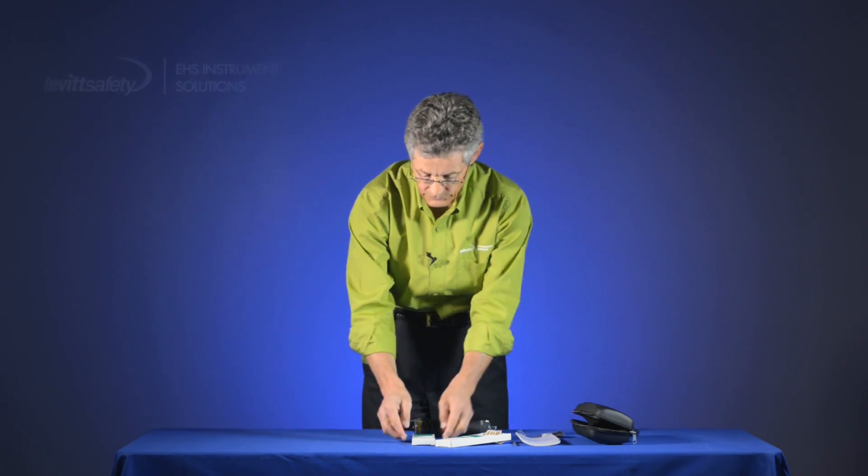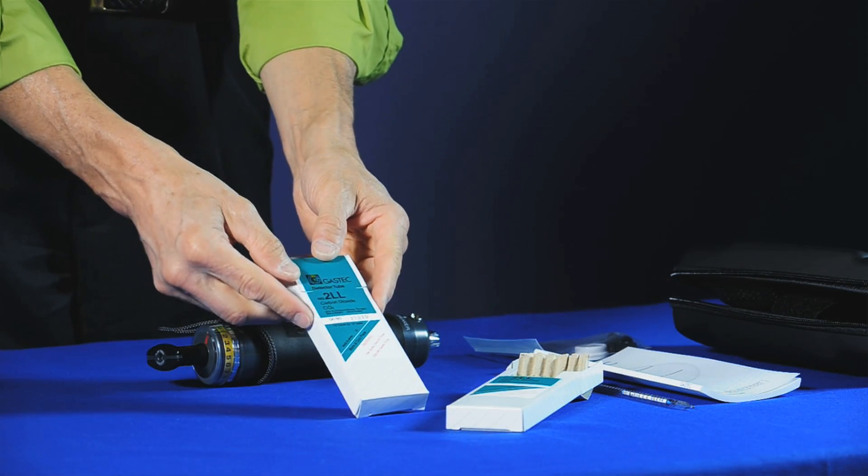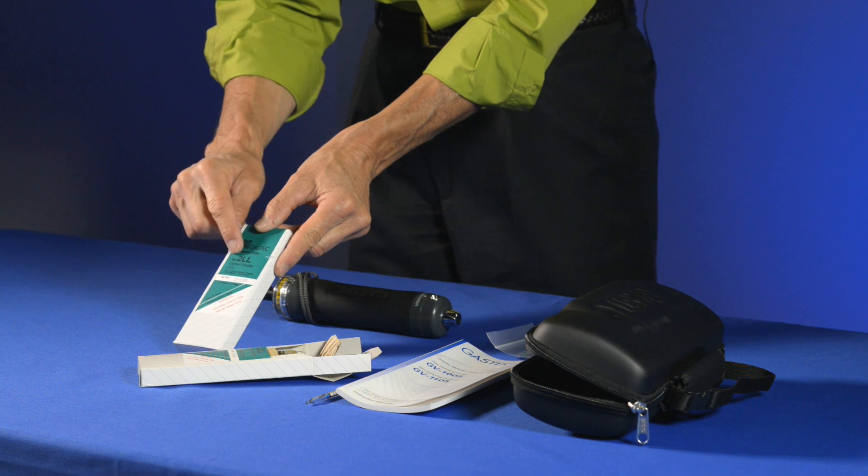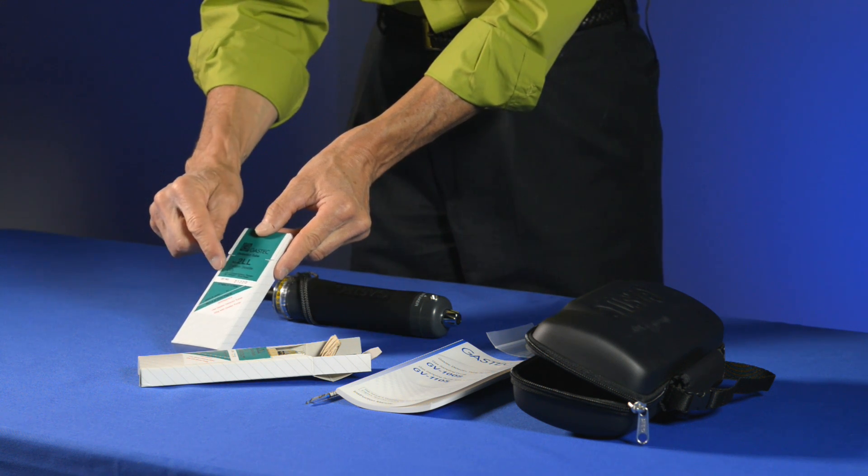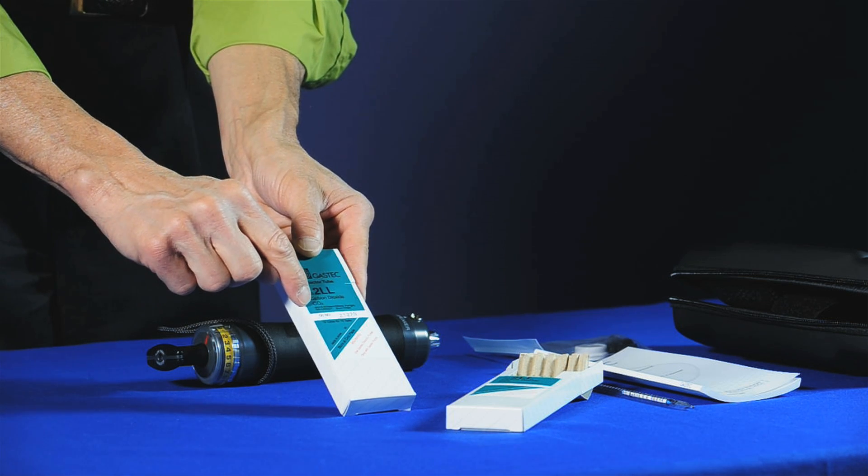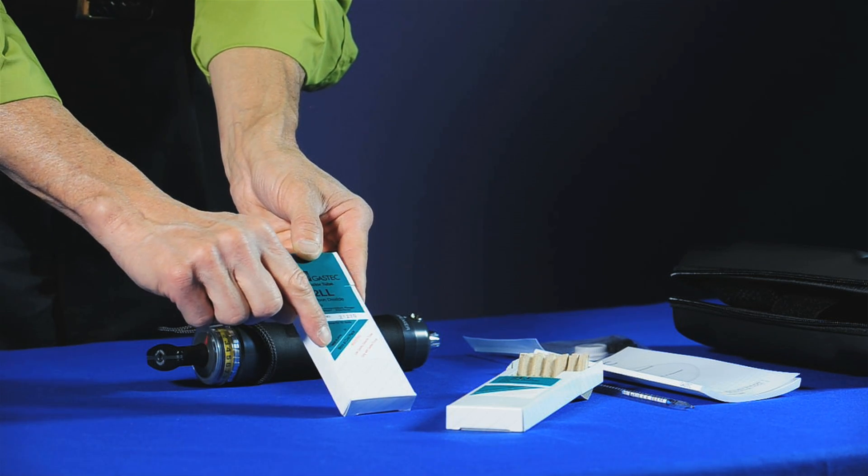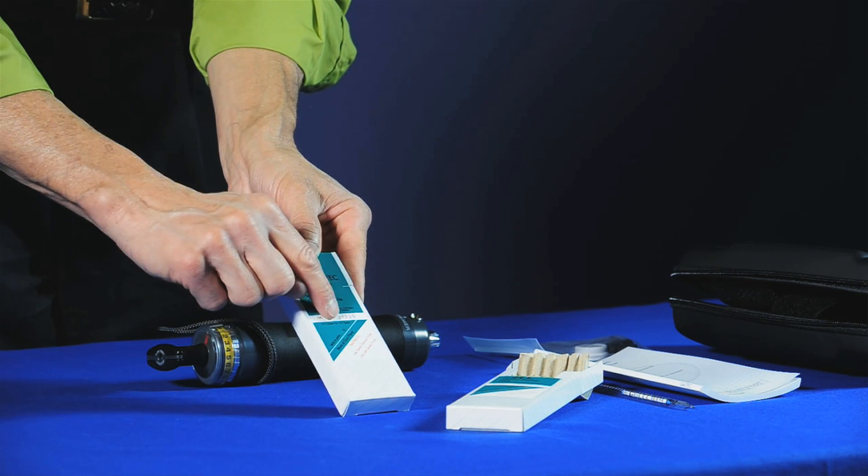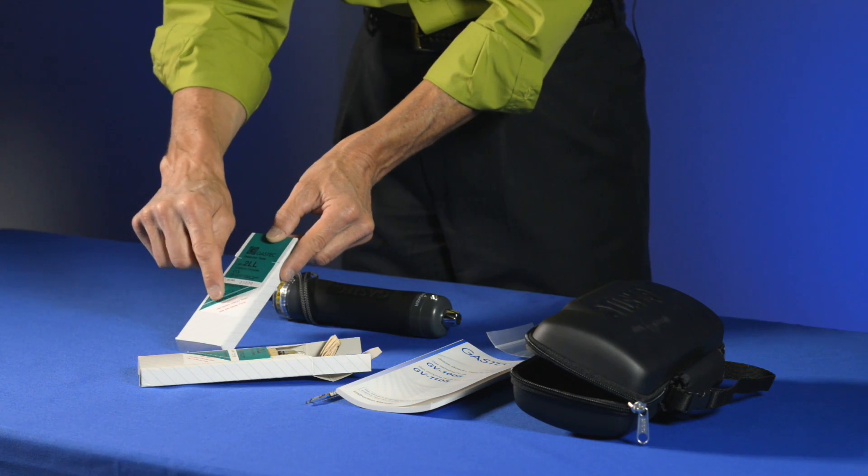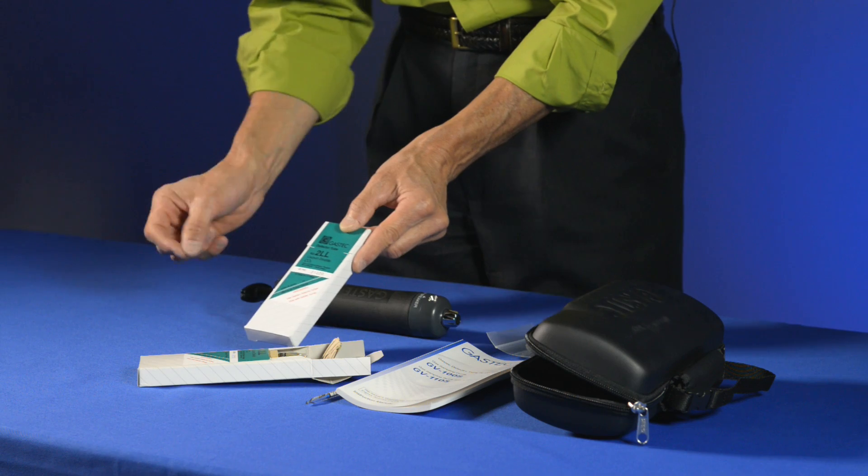So the other part of the system, of course, is the boxes of tubes. And like I mentioned, there's over 500 different ones. We're going to use carbon dioxide today, a number 2LL tube. You'll notice on the front of the box it says the range of the tubes and the gas we're measuring. It tells us to store it in a cool place, that there's 10 tubes for 10 tests in the box, and a warning from GasTech that these tubes are pre-calibrated for use only with the GasTech pump.